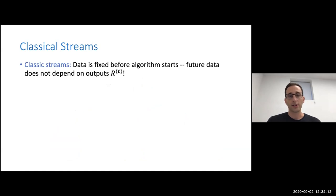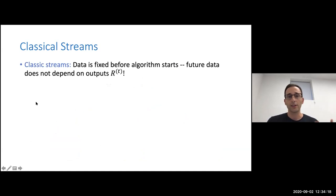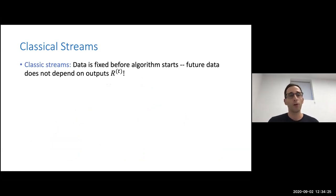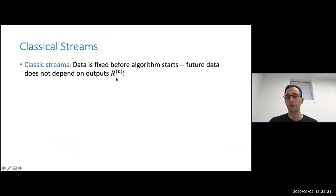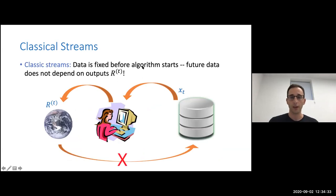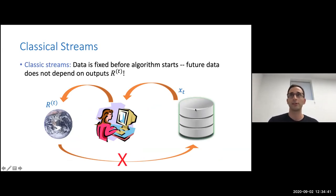In the classical literature about streaming algorithms, the data is fixed before the algorithm starts. The analysis is performed over the randomness of the streaming algorithm, and in particular, future data items do not depend on previous values r_t. So in the picture, there is no connection back from the world that received r_t to the database that contains the stream of elements.